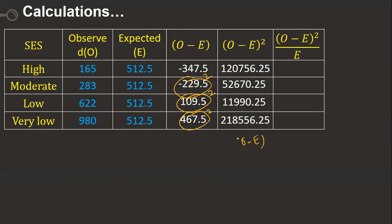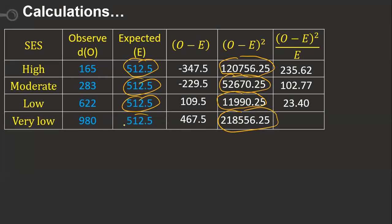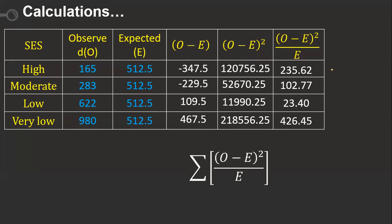Each squared value is divided by the expected value E = 512.5. The results for all four categories are then summed. This total gives the chi-square calculated value: χ²_calc = 788.24.